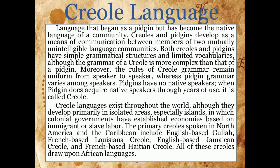Creole languages exist throughout the world, although they develop primarily in isolated areas, especially islands. The primary creoles spoken in North America and the Caribbean include the English-based Gullah, French-based Louisiana Creole, English-based Jamaican Creole, and French-based Haitian Creole. All of these creoles draw upon African languages.